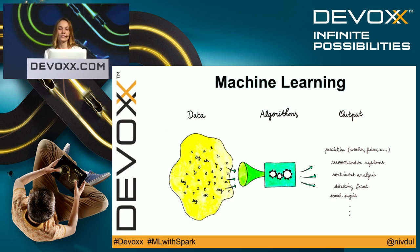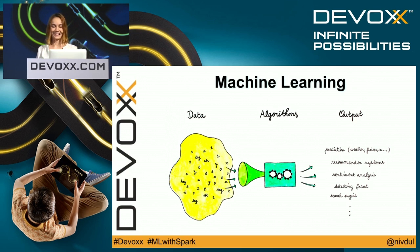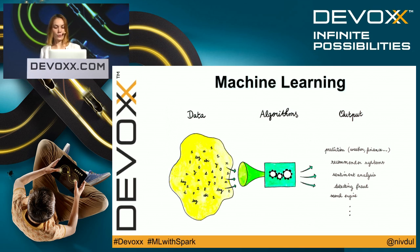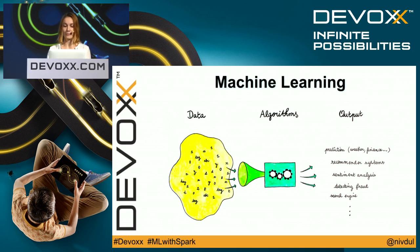First, machine learning. Machine learning, or ML, can be viewed as programming by example — you learn from examples, from experience. In fact, ML is all around you. You get into contact with it every day. For example, Facebook recommendations, Twitter follower suggestions, or Amazon recommendations.